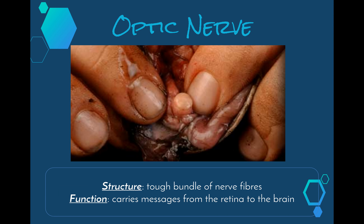The optic nerve is a tough bundle of nerve fibres — within that single nerve are lots and lots of individual nerve fibres. Its job is to carry the electrochemical messages from the retina to the brain in order for us to actually make out what we're seeing.